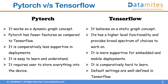PyTorch works on a dynamic graph concept, whereas TensorFlow uses a static graph. Static means predefined — before execution you set certain rules and structures. With PyTorch, there is no concept of pre-definitions; everything is done dynamically.